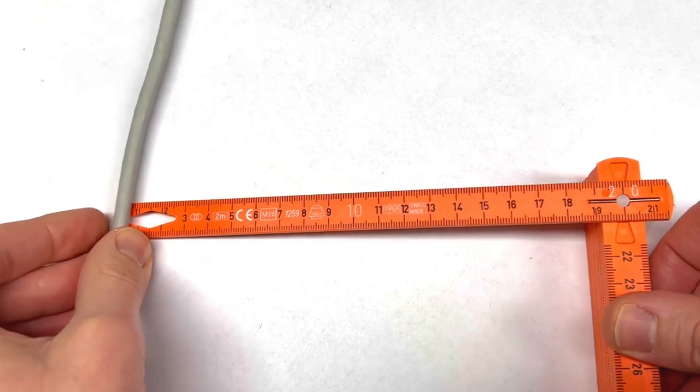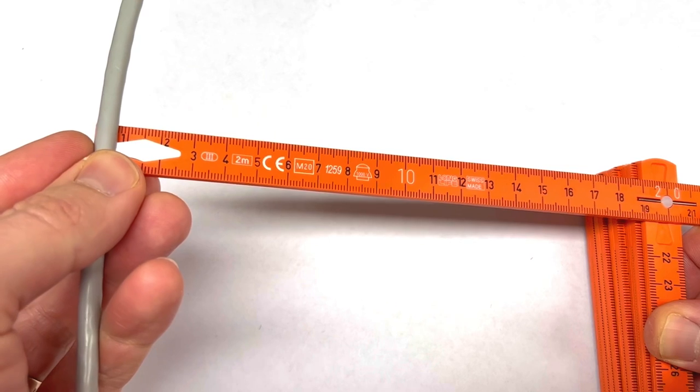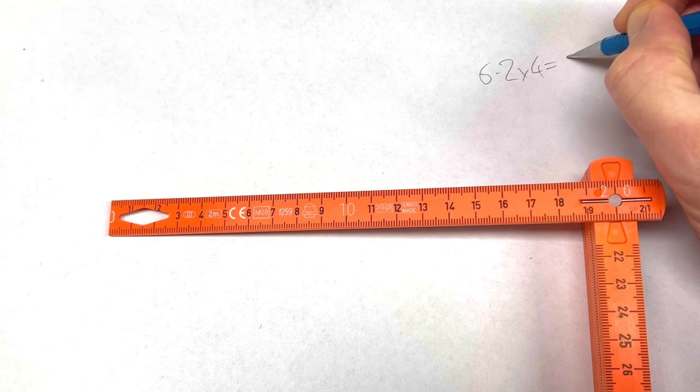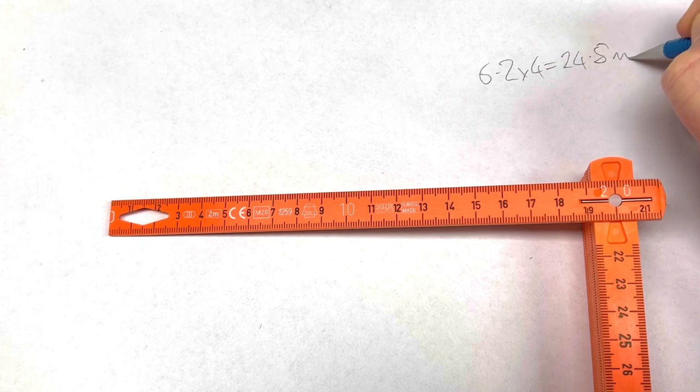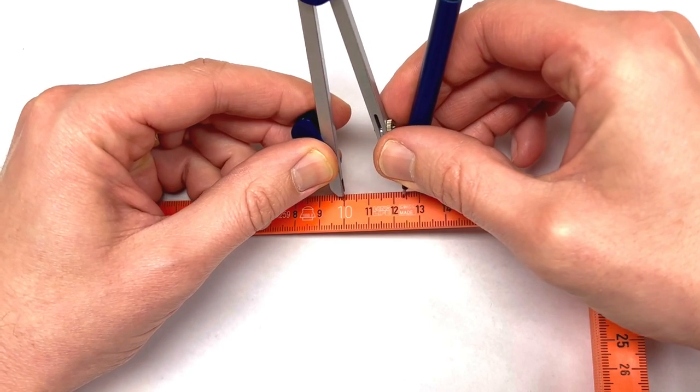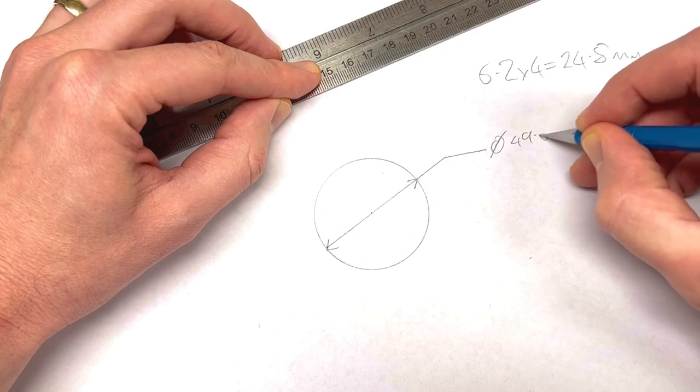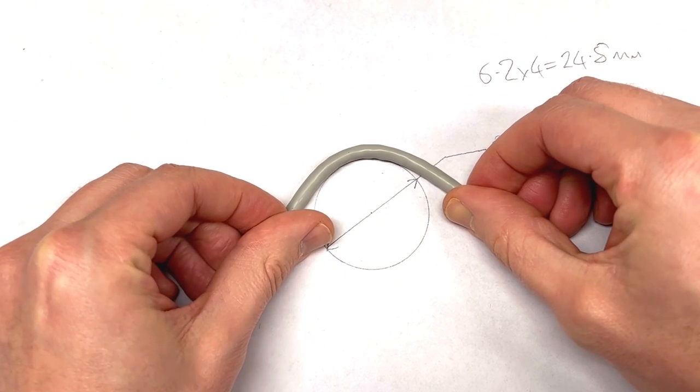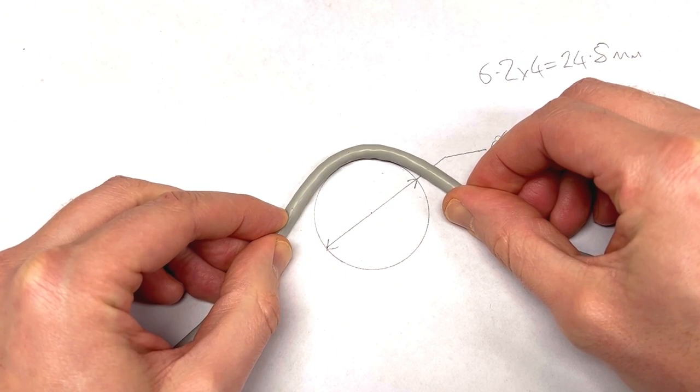So let's take the outer diameter of a Cat6 cable which is about 6.2 millimetres. Multiplying that by four gives us a radius of 24.8 millimetres. So if we create a circle that is 49.6 millimetres across, then this is the size of circle that we can bend a Cat6 cable around without causing any damage or loss of performance to the cable.